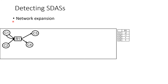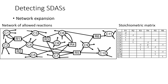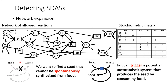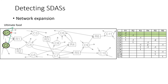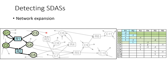For detecting the STAS, we will first introduce the operation of network expansion. Suppose that we have a reaction where two C1s and one C2 react to generate one C3 and one C4, and we can use a table to represent the stoichiometry of this reaction. The reactants have negative entries while the products have positive ones. For a network with multiple reactions, we can write them in a stoichiometric matrix. Note that this graph only represents a subset of a bigger network for illustrative purpose. Then with this matrix, we want to choose some species as food and some others as a seed, such that the seed cannot be spontaneously synthesized from food, but can trigger a STAS that produces the seed by consuming food. To illustrate, let us assume that we only provide C1 and C2 as the ultimate food. Then R1 can occur and produce C3 and C4, and then R2 can occur to produce C5.